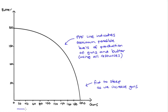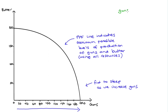It goes from flat to steep as we increase the number of guns that we produce. At the heart of the reason for this curvature is that this model assumes that our economy has lots of different types of resources, some of which are more suited to making guns than others.